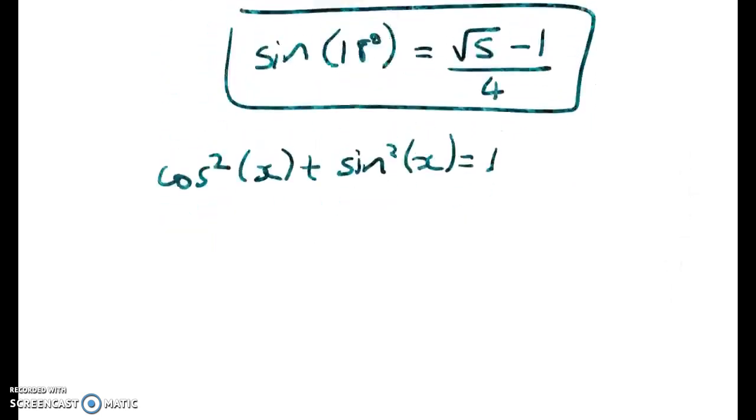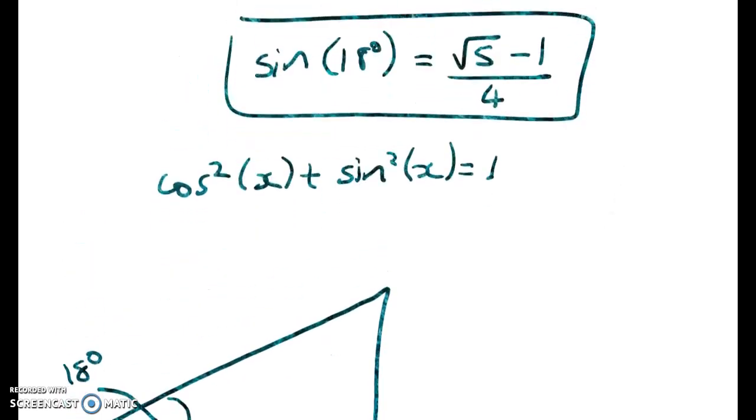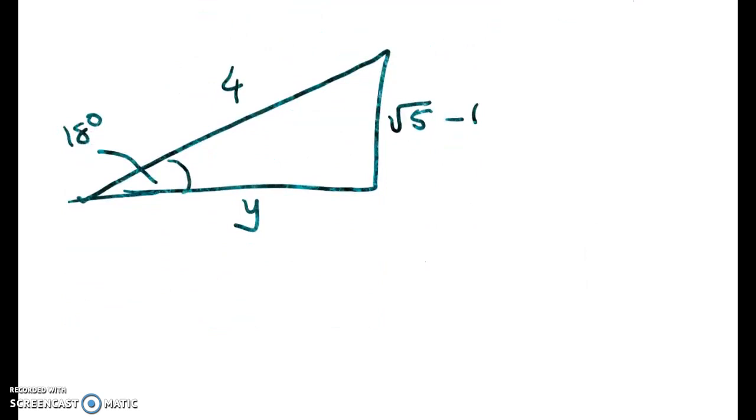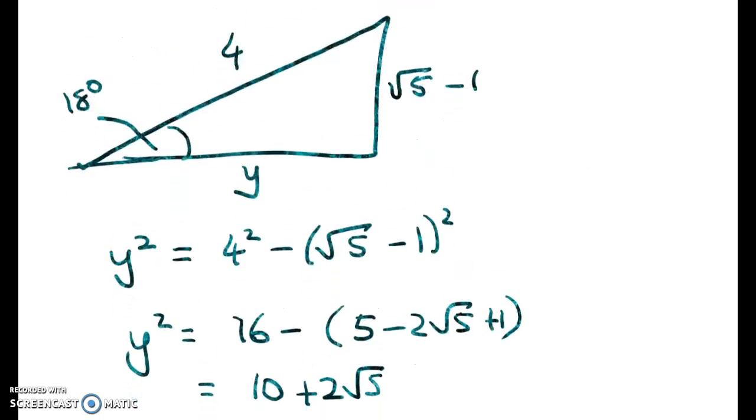So we've got 18 degrees here. We know that the sine of that is equal to the opposite side over the hypotenuse. So we can put those two on. Here we've got root 5 minus 1, and here we've got 4. I'm going to call that other side y. So we can now write that y squared is equal to 4 squared minus that side squared. So y squared is 16 minus 5 minus 2 root 5 plus 1. So y squared works out to be 10 plus 2 root 5.